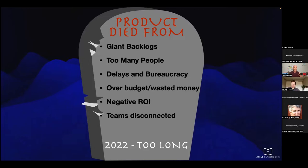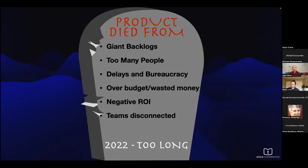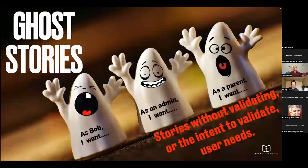One consequence: the more features you've got, the bigger the backlogs — and that takes time, energy, and effort to refine. Maybe promises made. When you have a giant backlog, you tend to think you don't have enough people, so you hire more, which creates more delays. More people doesn't usually make it faster. It creates more bureaucracy, more reporting, more meetings to coordinate between teams — leading to over budget, waste of money, negative ROI, and teams that are burnt out, feeling like they're working in a feature factory — or what I'm calling the feature creature factory.